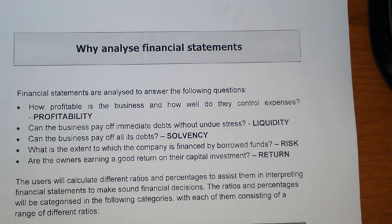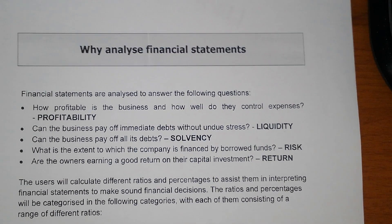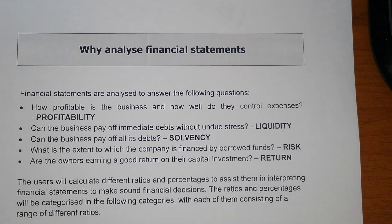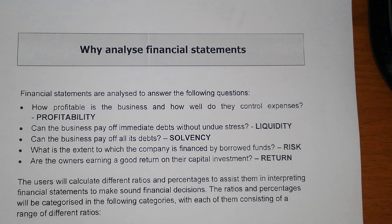In a business, we have all the steps that we will follow until we get to the financial statements. A source document will be prepared, it will be recorded in the subsidiary journals, we will post it to the ledger, we will draw a trial balance to ensure that the debits and credits are the same, and then we will complete the financial statements.